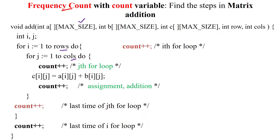The i and j variable declarations will consume zero amount of time. The for loop, which is the control part, will consume one unit of time, and it executes row number of times.